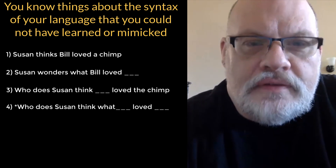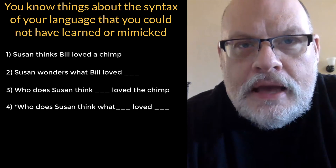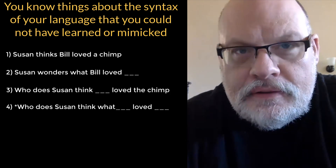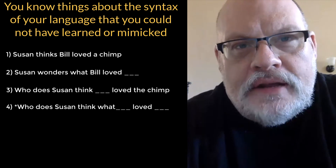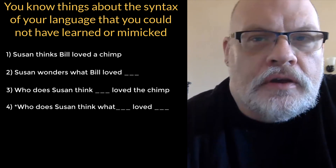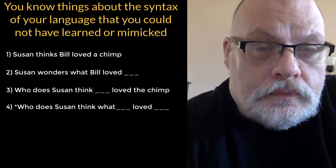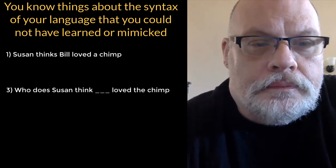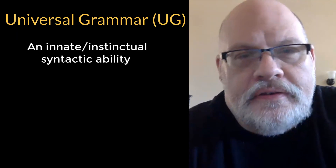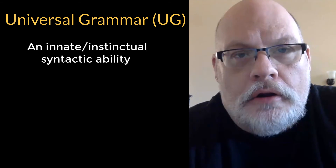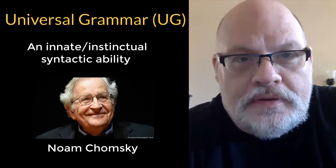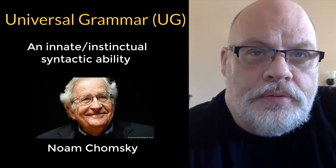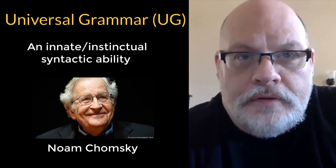That suggests that language might be an instinct — that is, it's born into us as an innate object which we might call universal grammar. The idea that some parts of our syntactic system are innate or an instinct is due to Chomsky, and it's one of the basic founding premises of generative grammar.